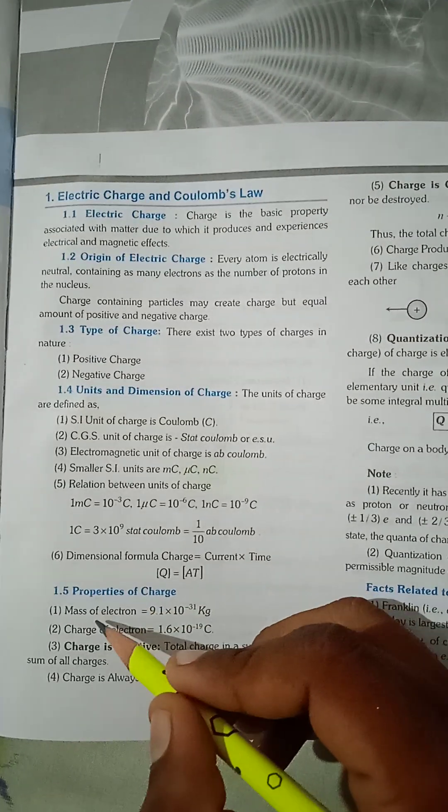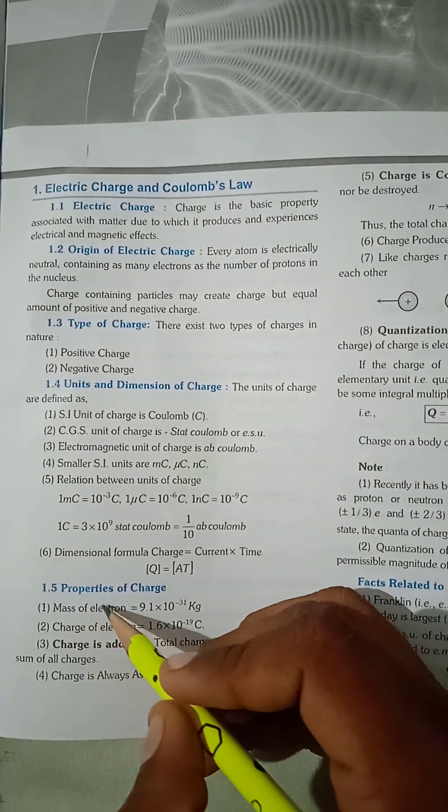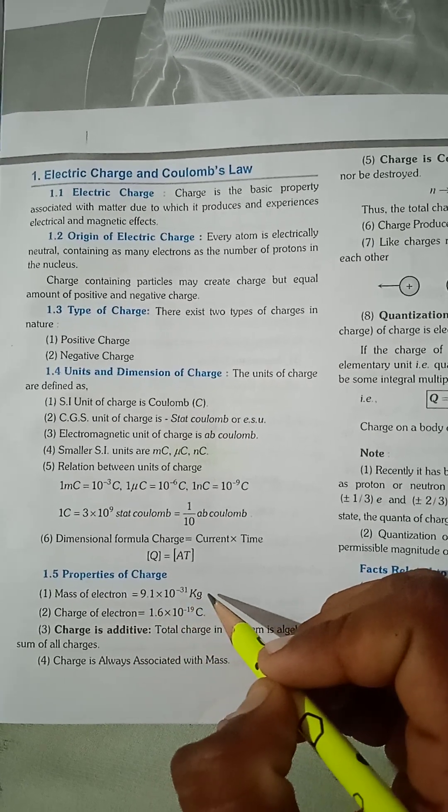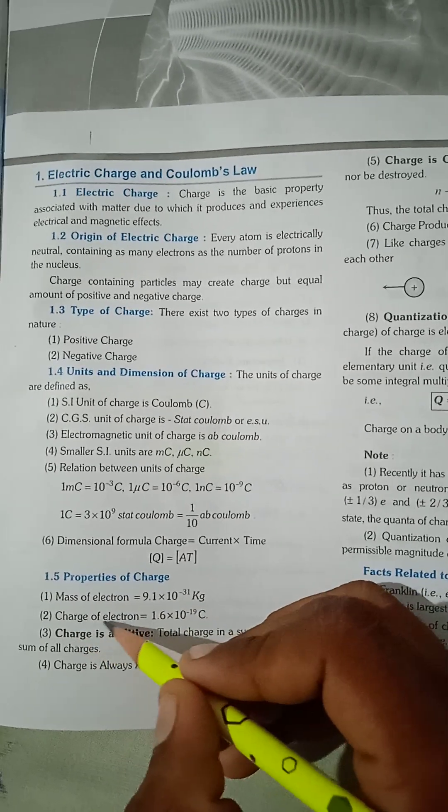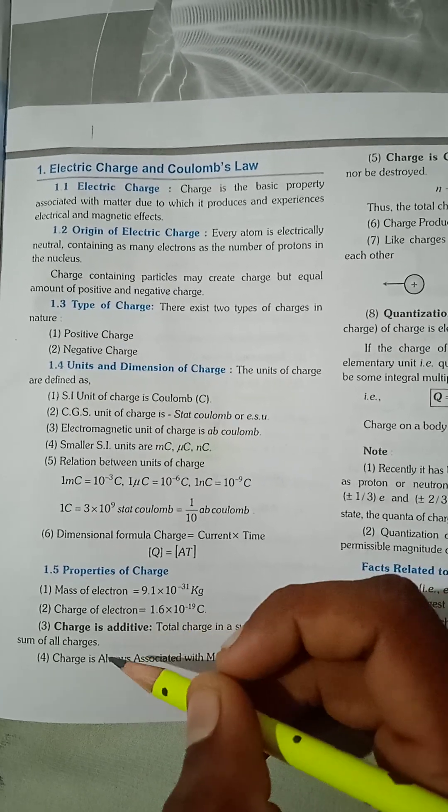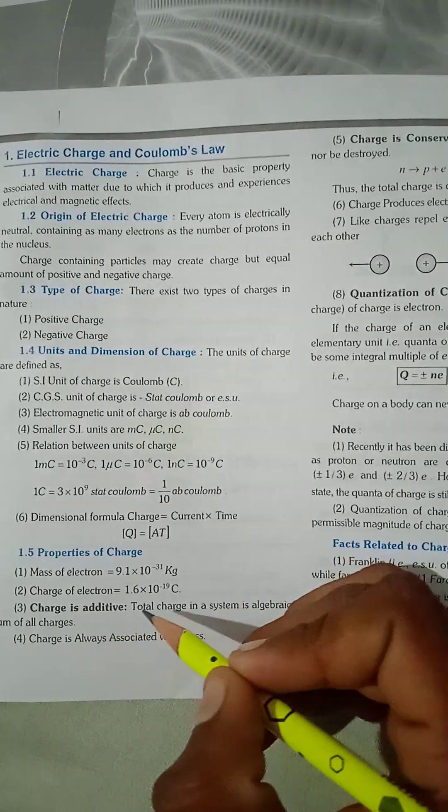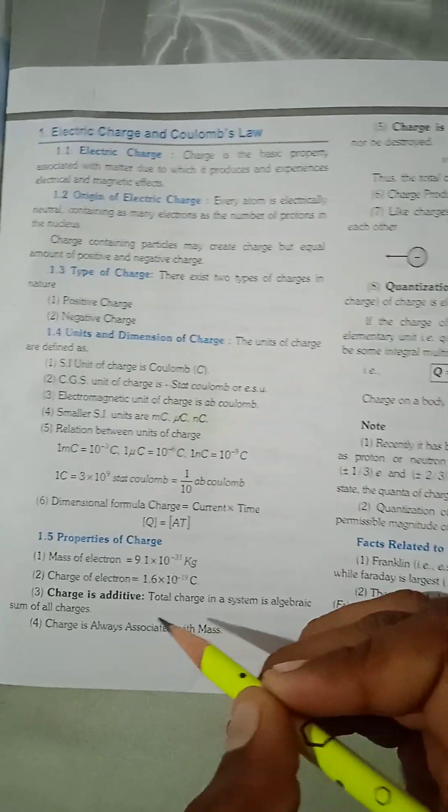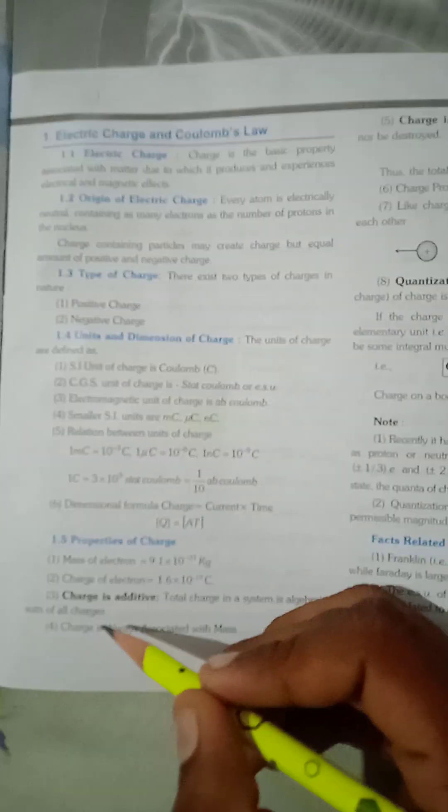Properties of Charge: Mass of electron 9.1 × 10^-31. Charge of electron 1.6 × 10^-19. Charge is additive - total charge in a system is the algebraic sum of all charges.